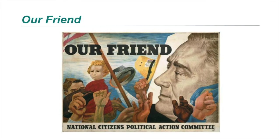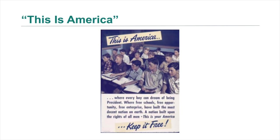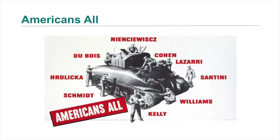This is Ben Shahn's poster Our Friend for the Congress of Industrial Organizations Political Action Committee, urging workers to vote for FDR during his campaign for a fourth term. This is another This is America propaganda poster emphasizing the American dream of equal opportunity for all — though all the children in the classroom are white boys. This is a poster issued by the Fair Employment Practices Commission, created in 1941 to combat discrimination in military-related jobs. The workers building a tank represent numerous European ethnic groups but not non-whites, even though the commission was created to forestall a planned march on Washington organized by black leaders.